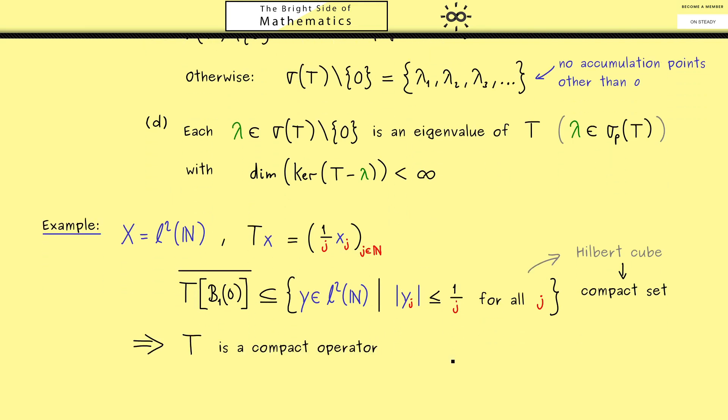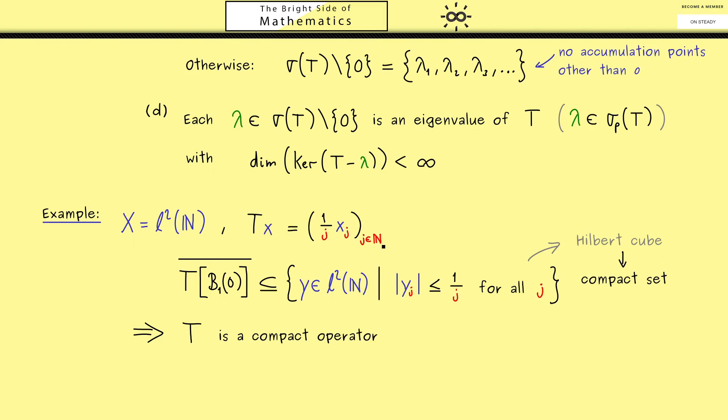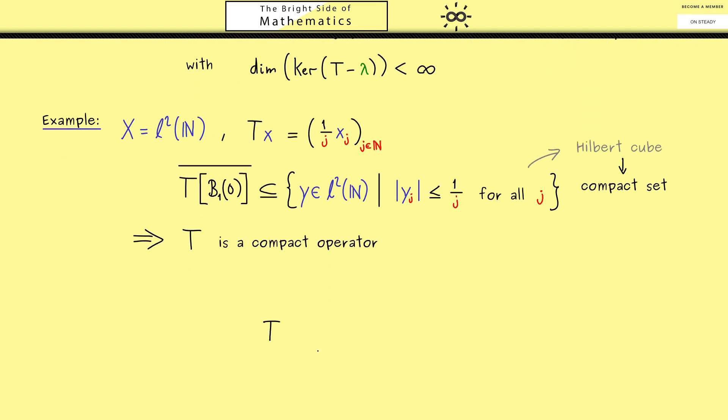But now the question is do we know the spectrum of this operator? And maybe there it's helpful that you could rewrite the operator as an infinite dimensional matrix. Then we immediately see that all the values are 0 with the exception of the diagonal. So first we have 1 over 1,